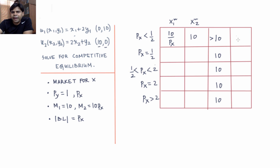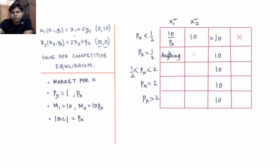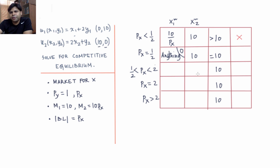When px equals 1/2, the budget line coincides with one of individual 1's indifference curves, so individual 1 is indifferent between any point on his budget line — we can put any number for his demand. Individual 2 still spends all income on x: his demand is 10px divided by px, which equals 10. If individual 1 chooses 0, demand equals supply, so the market can clear — px equal to 1/2 is a competitive equilibrium price.